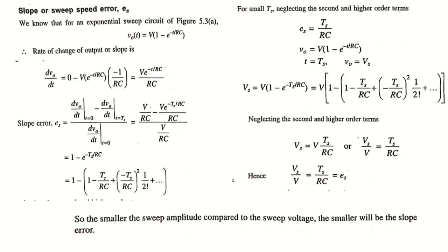The sweep speed error is defined as the difference between the rate of change of output voltage at the beginning of the sweep and the rate of change at the end of the sweep, divided by the initial value of the slope. To find this, we first need to find dV0/dt. Applying the derivative with respect to time, we get dV0/dt = V × e^(−t/RC) / RC.